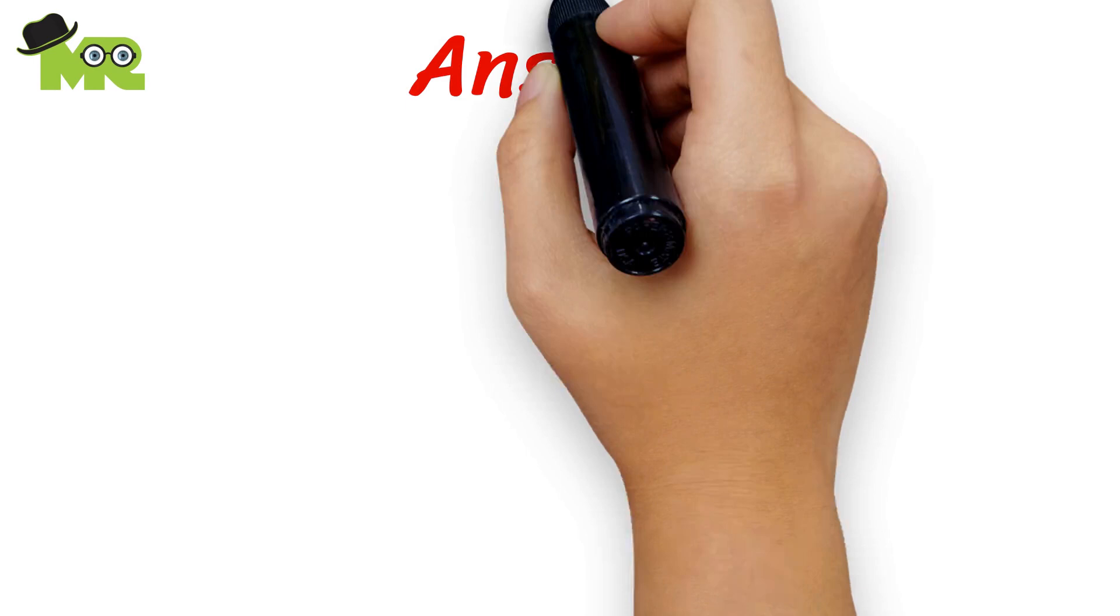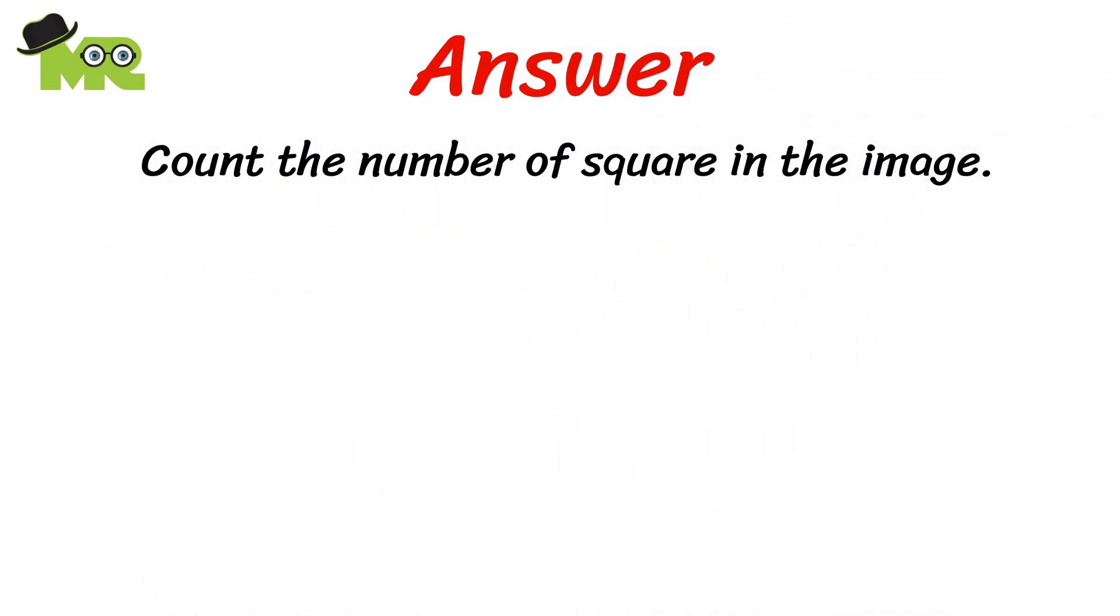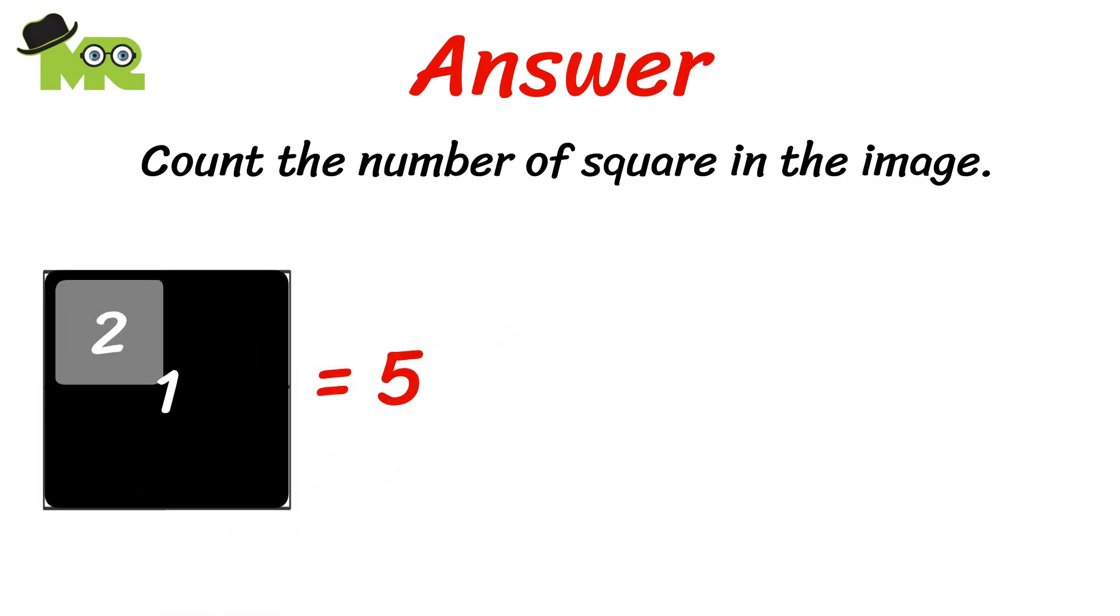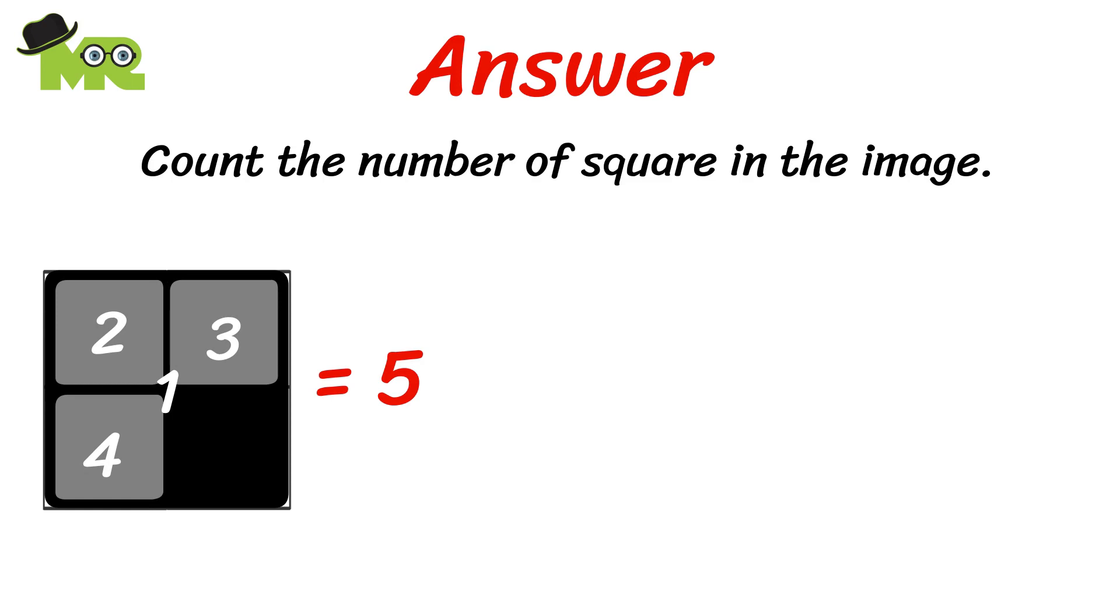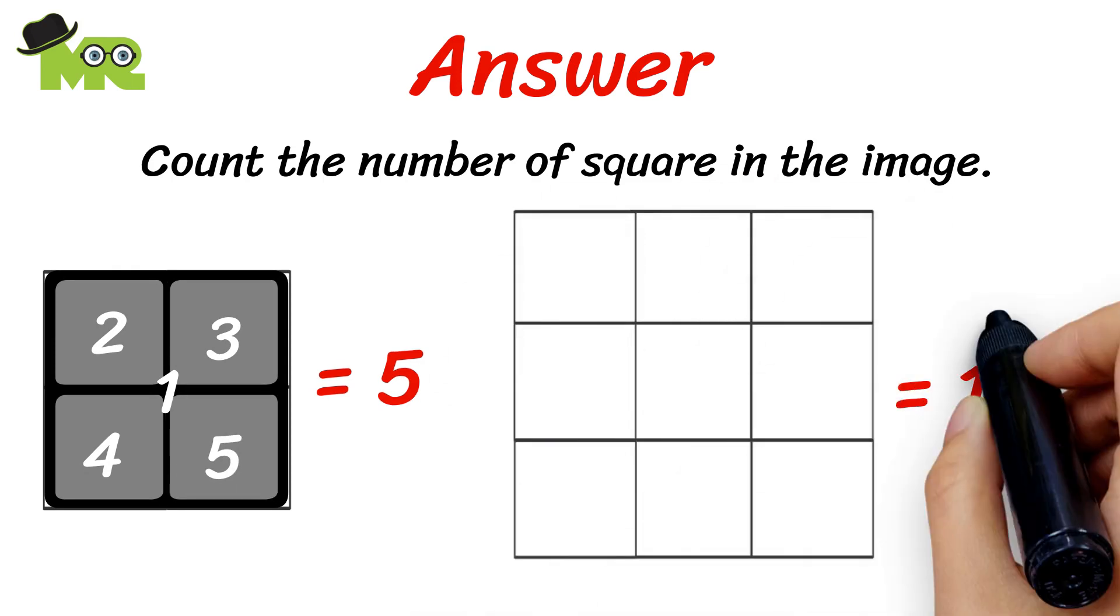The answer is really simple. This is nothing but a number of squares in the image. In the first image, there are five squares. And in the second image, there are 14 squares.